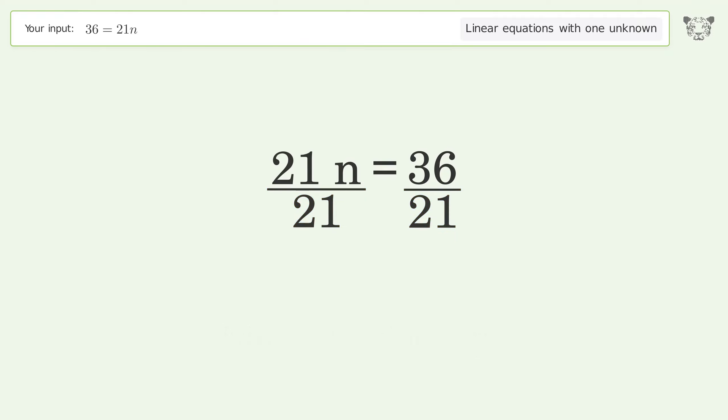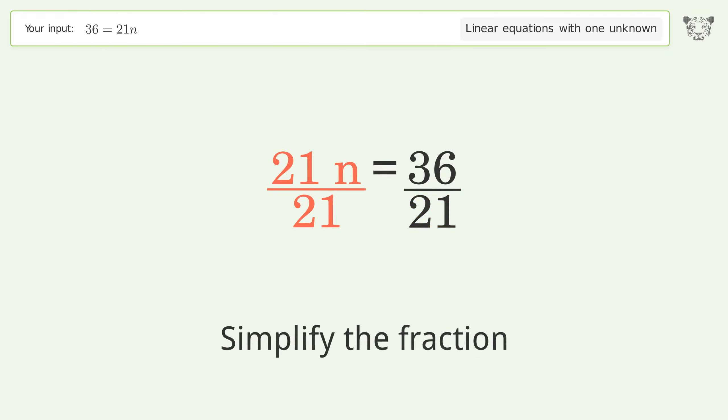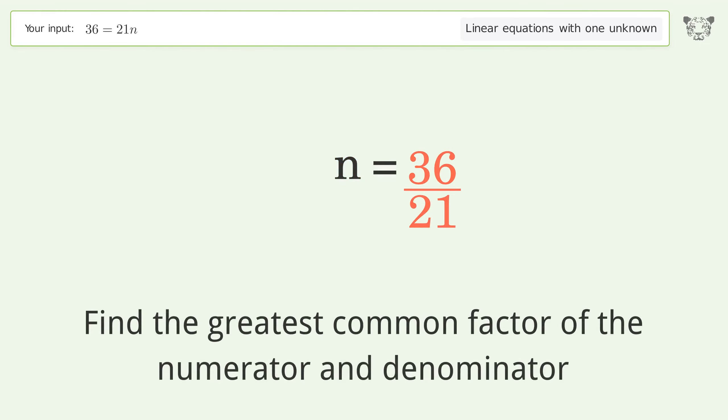Isolate the n: divide both sides by 21. Then simplify the fraction.